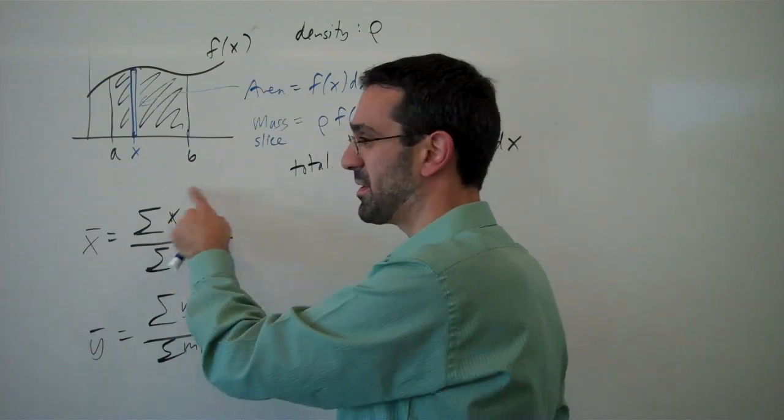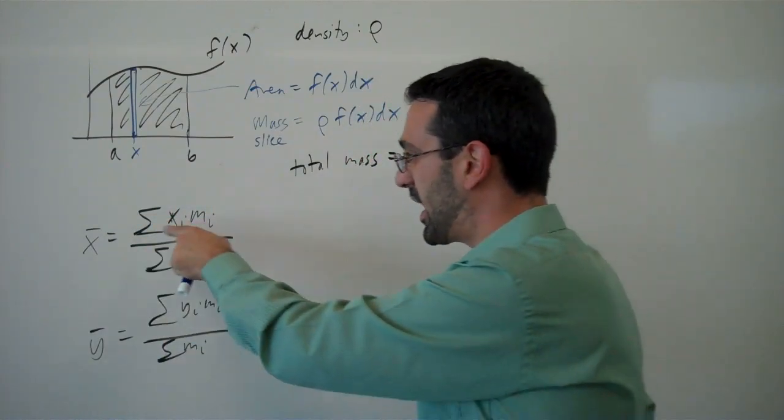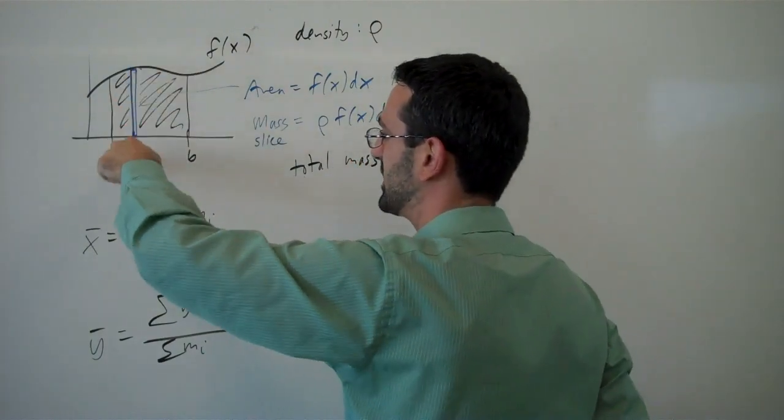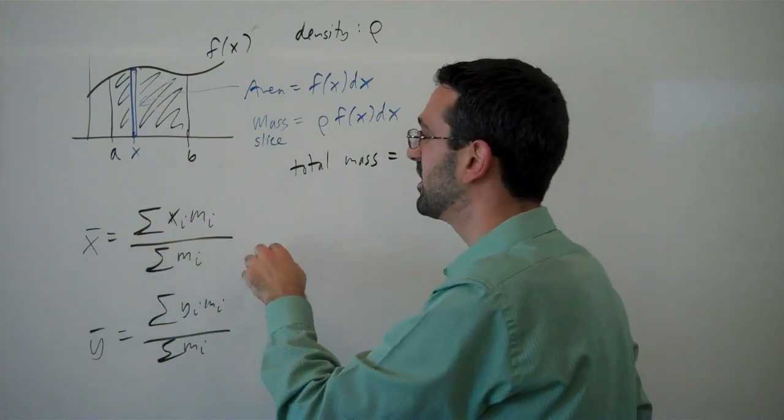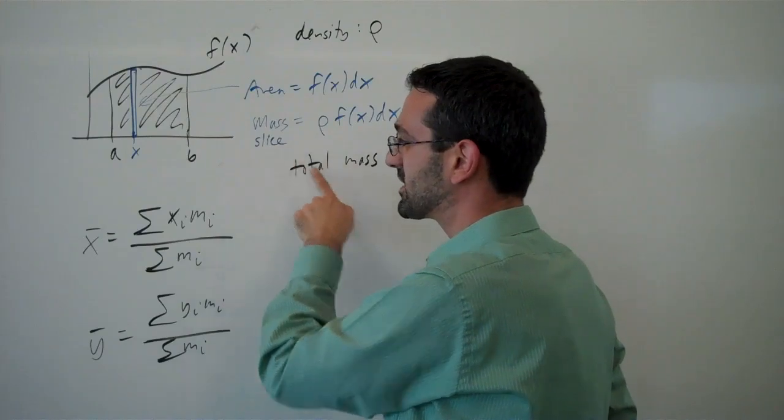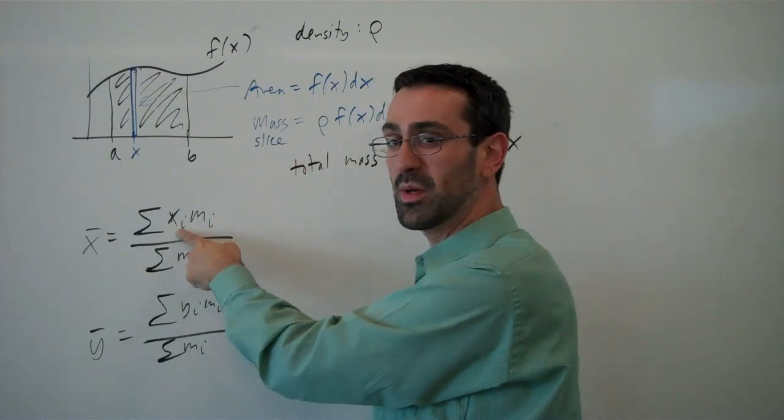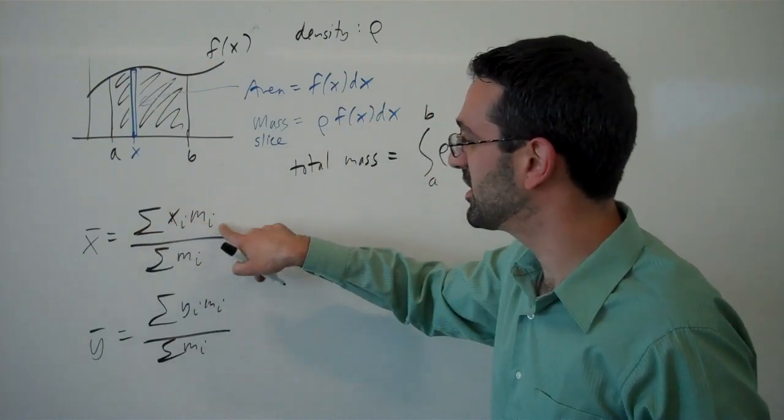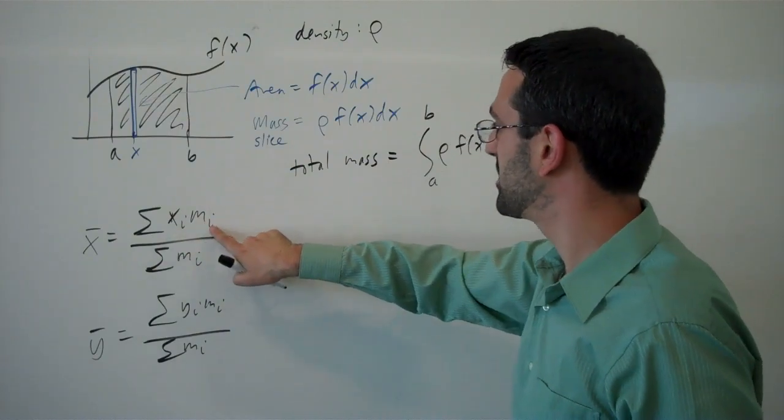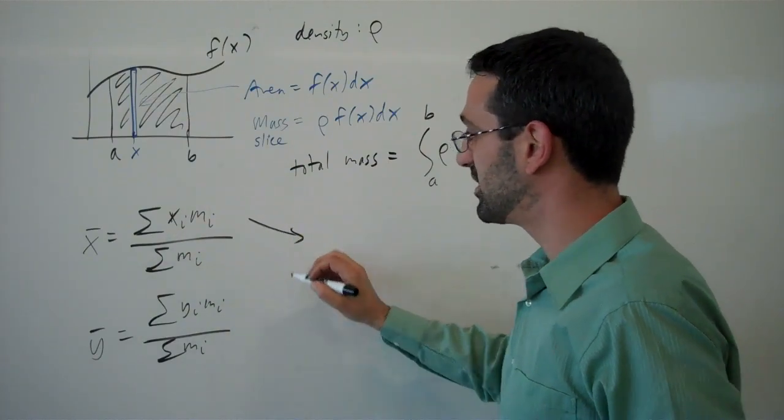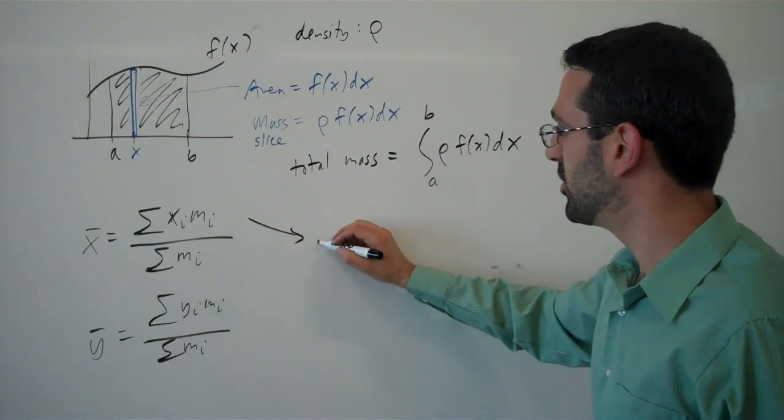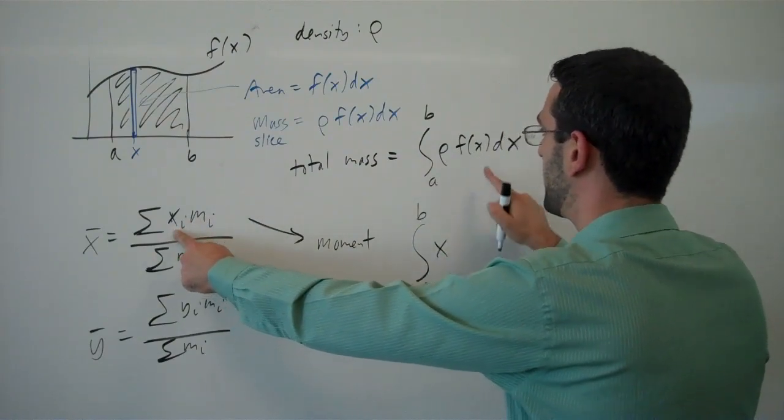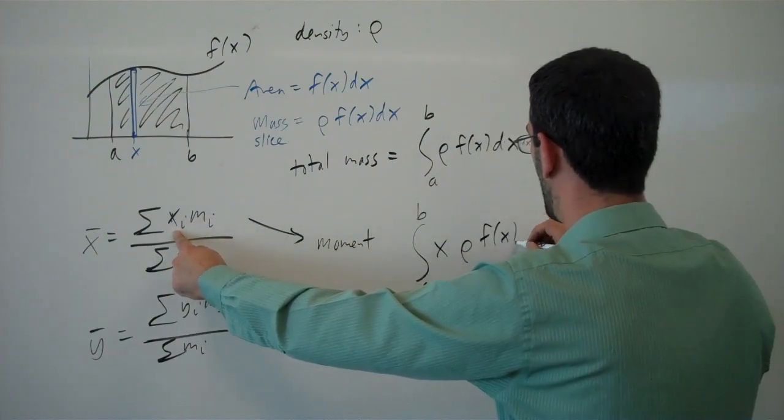So now let's think about these moments. Here we were adding up the x location of the slice times the mass of the slice. We have this slice, we know its mass, and we know its x location. Its x location is given by x. And so this moment term, the thing that we're going to add up, will be x times the mass of the slice. And so in our continuous form, that numerator, the moment, is going to translate to the integral of x times the mass. So x times rho f of x dx.